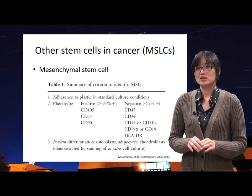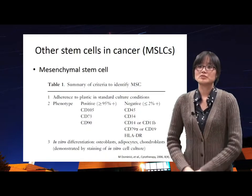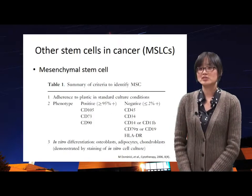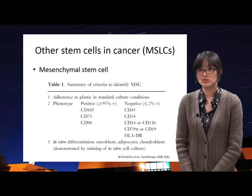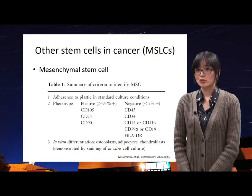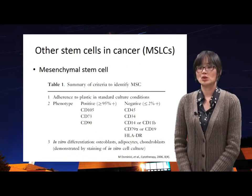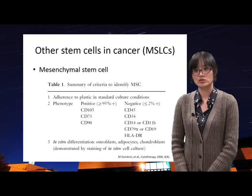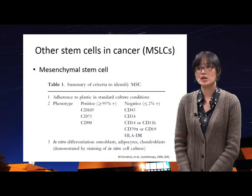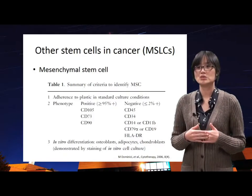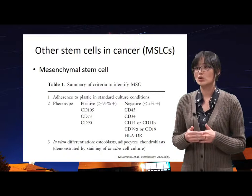To define the properties of cancer stem cells, the International Society for Cellular Therapy Position Statement made minimum requirements. So we can identify the properties of mesenchymal stem cells based on this statement, because mesenchymal stem cells are the most important candidate in glioblastoma.